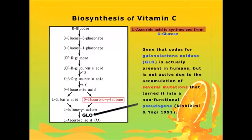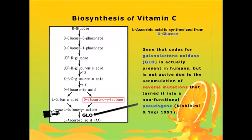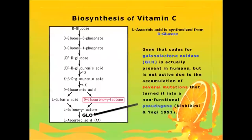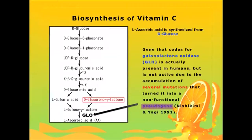Looking at the synthesis of vitamin C, L-ascorbic acid is synthesized from D-glucose by several metabolic steps. The last step of this biosynthetic pathway is very important, where L-gulono-gamma-lactone is converted to L-ascorbic acid by an enzyme called gluconolactone oxidase, or GLO. It has been shown by Nishikimi and Yagi in 1991 that in humans, this enzyme GLO has accumulated several mutations, and because of those mutations its functioning has stopped and it has become a pseudogene, making vitamin C unable to be synthesized in the human body and therefore requiring dietary supplementation.